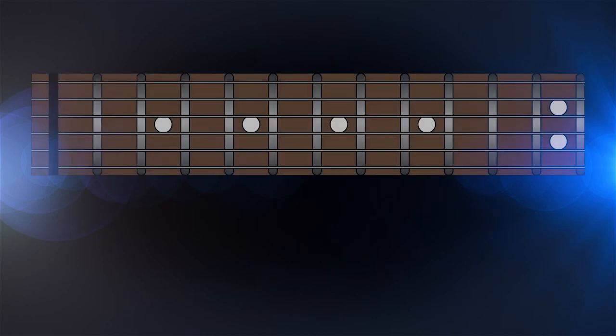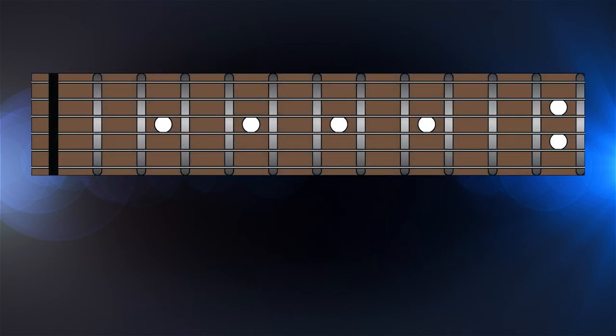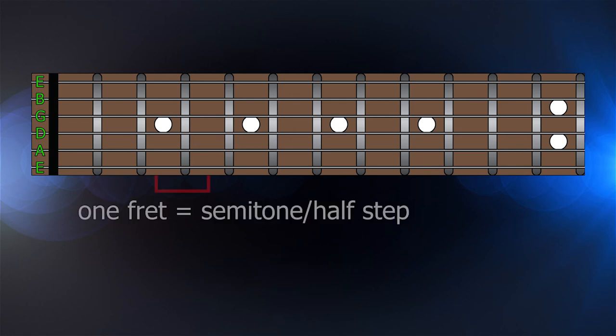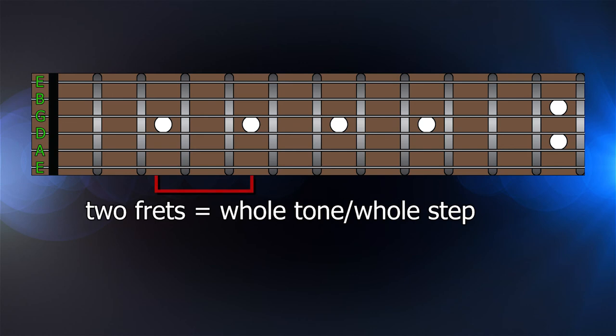Now it's time to see how the notes relate to the guitar. If you watched my tuning video, you may recall that the open strings on the standard guitar are E, B, G, D, A, E. On a guitar, a semitone or half step is a one fret difference. A whole tone or whole step would be two frets.